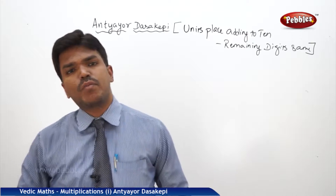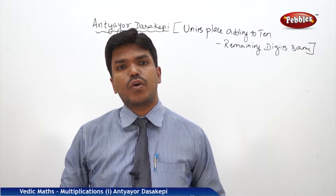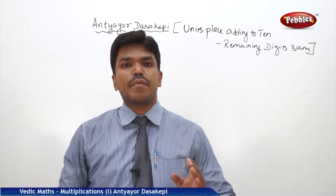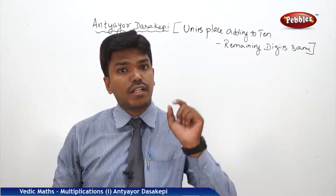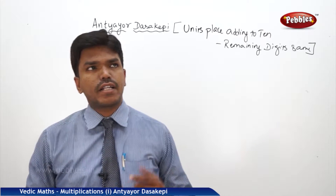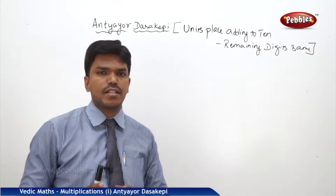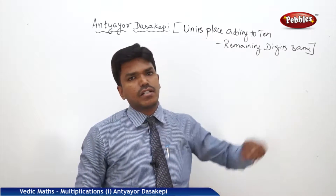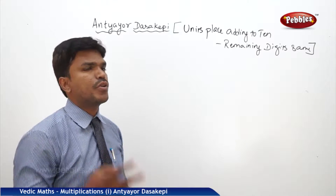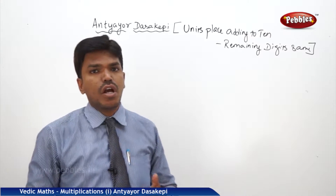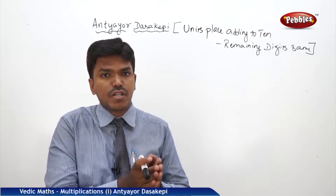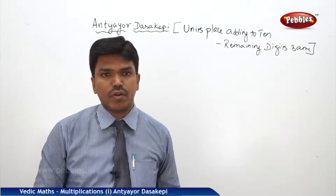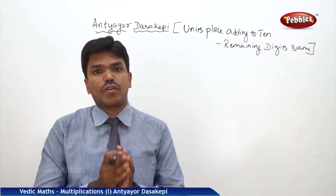In Vedic Maths, we are going to learn one more technique — Anteor Dasa Kp. Anteor Dasa Kp means the numbers which are summing up to 10 at the end. In other words, units place digits adding to 10 and the remaining digits are the same. If you want to multiply two numbers whose units place digits add to 10 and the remaining numbers are same, there is an easy way to find the product.